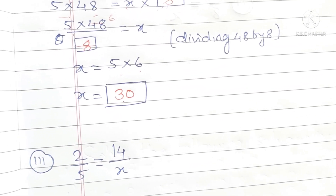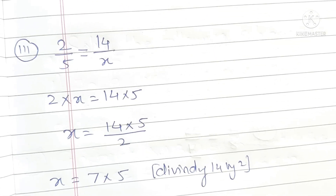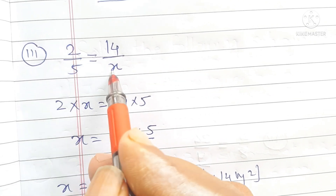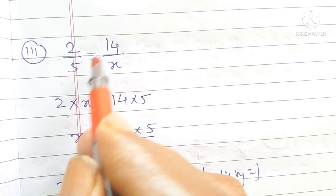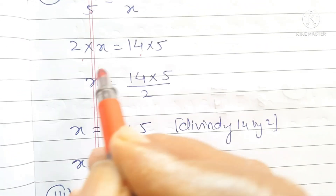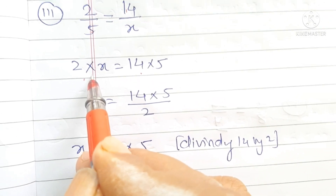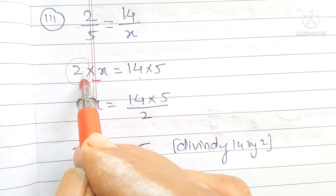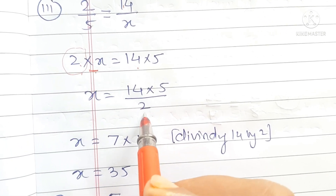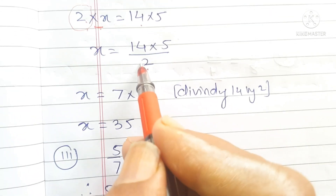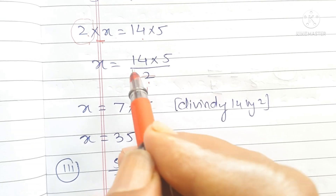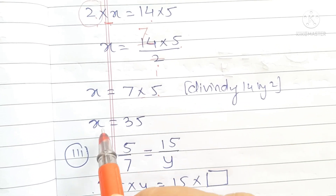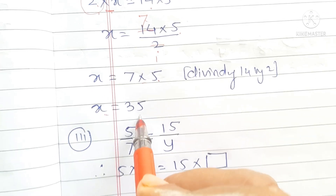2 by 5 is equal to 14 by x. Cross multiplication: 2 into x equals 5 into 14. So x is equal to 5 into 14 divided by 2, giving x is equal to 35.